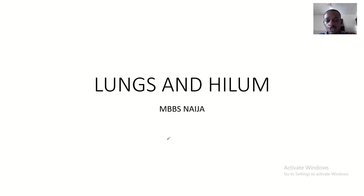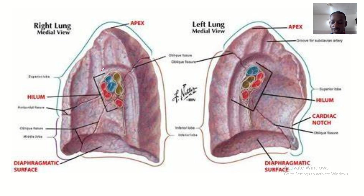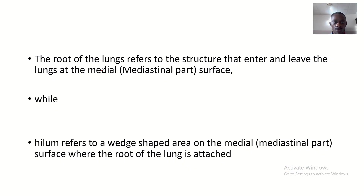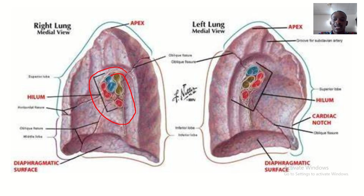We're discussing the anatomy of the lungs and the hilum. This is a lung, and here is the hilum — the hilum is the structure that is on the lungs.